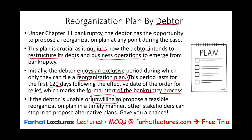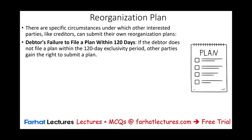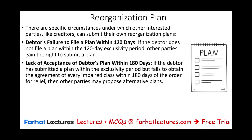If the debtor is unable or unwilling to propose a feasible plan in a timely manner, other stakeholders — usually interested parties like creditors — can step in to propose an alternative plan to protect their interests. If the debtor fails to file within 120 days, other parties have the right to submit a plan. Also, if the debtor submitted a plan within 180 days but failed to obtain agreement of the impaired class — creditors and shareholders who will be losing out — other parties might propose an alternative plan.